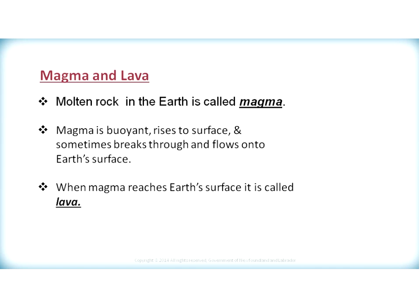When we look at magma and lava, by definition, magma is molten rock located within the Earth. Magma is very hot and buoyant, where it rises to the surface and sometimes breaks through and flows onto the surface. If the molten rock flows onto the surface, it is then called lava. So magma is molten rock located beneath the surface, and lava is molten rock on or near the Earth's surface.